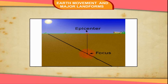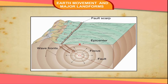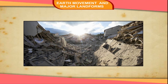The point on the earth's surface that lies directly above the focus is called the epicenter. The vibrations reach this point first and then spread outward over the surface. Thus, the epicenter usually suffers the maximum destruction.